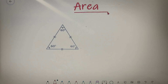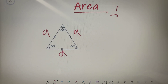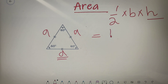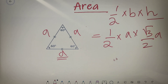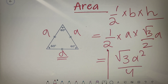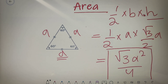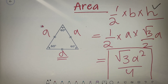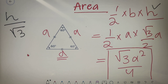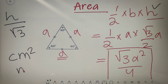Now let's find the area of an equilateral triangle. Taking the sides equal to A, the area of a triangle is equal to half × base × height. So the area of an equilateral triangle is ½ × A × (√3A/2), and upon multiplying these values you get the final answer as √3A²/4. If in a question only the height of the equilateral triangle is given, you can directly write the area as h²/√3. Area is measured in centimeters squared or meters squared.